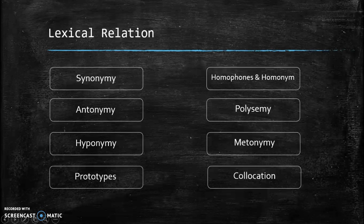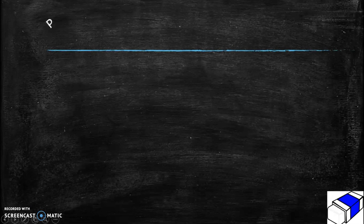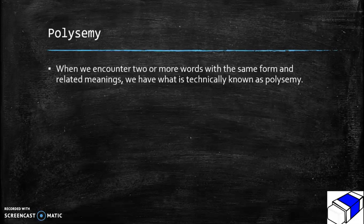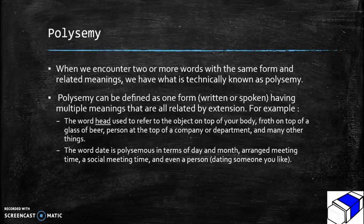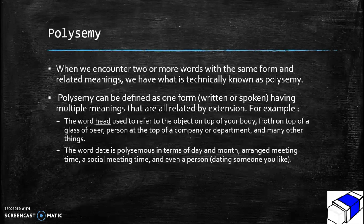The next subject is polysemy. When we encounter one form (written or spoken) having multiple meanings that are related by extension, we have what is technically known as polysemy. For example, the word 'head' can refer to the object on top of your body, froth on top of a glass of beer, or a person at the top of a company or department. The word 'date' is polysemous in terms of a day and month, an arranged meeting, a social meeting, or even a person you are dating.